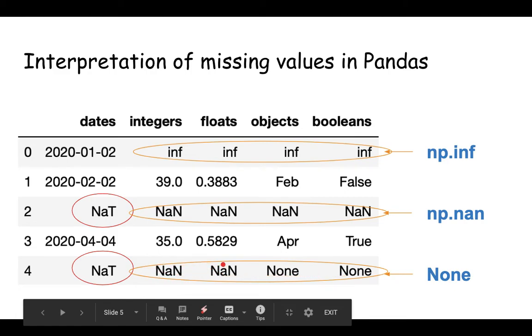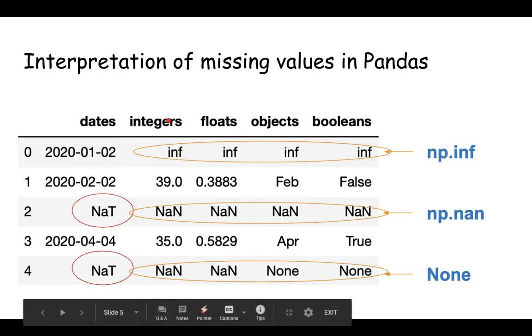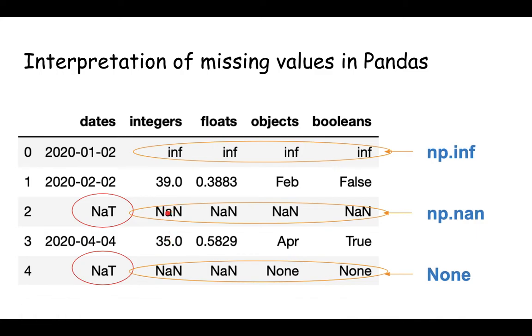So when we are typing these values in the dates column, it's automatically converted to NaT, so not a time format. And in case of objects, the None stays as is, but in case of integers it's automatically converted to NaNs, which is not a number. And also this was an integer column, but when we introduce NaNs in there, it automatically gets converted into floats. So that's another point to remember.